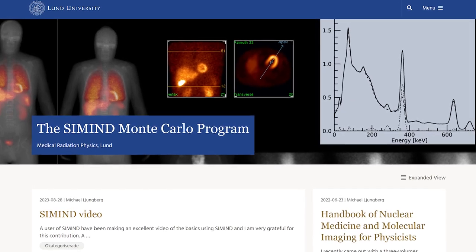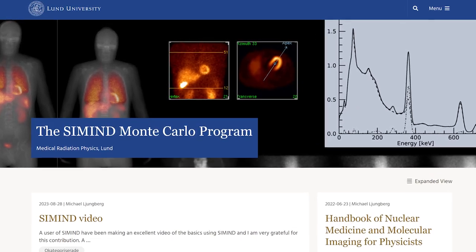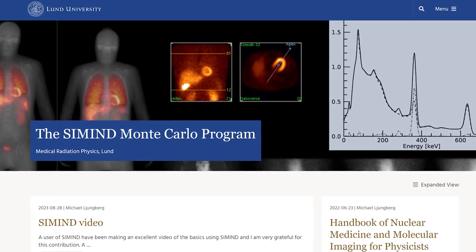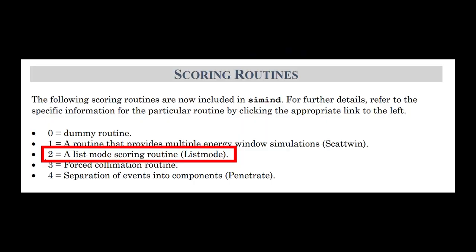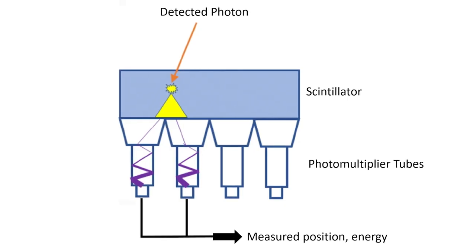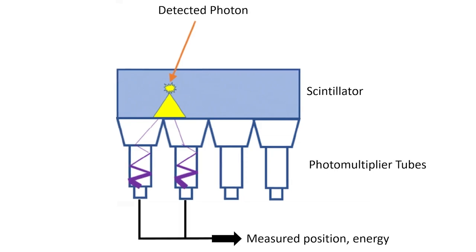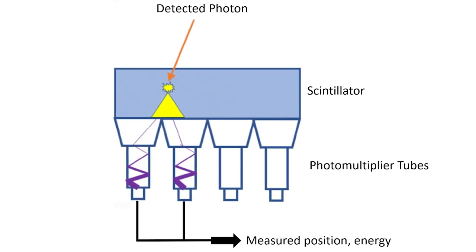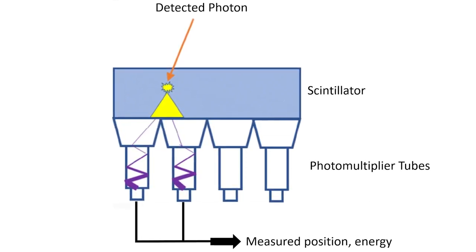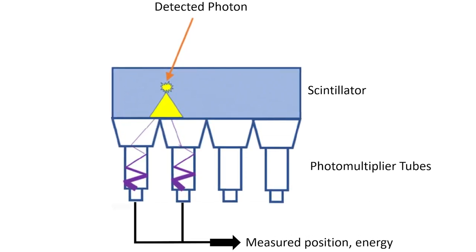Welcome to the second video of the Simmend tutorial series. In this video, we'll look at the list mode routine — a routine whereby all the information for every single simulated photon is stored: its detected position and energy in the scintillator crystal, the number of times it's scattered in the phantom, and its point of origin.